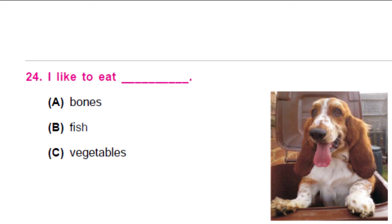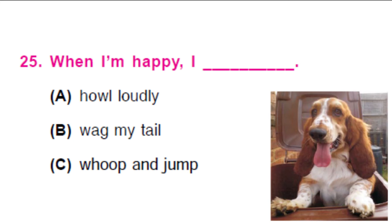Let's go to the next question. I like to eat dash — it's again about the dog. Which option is right? Yes, he loves his bones — so a dog loves to chew on bones, so option A is right. When I am happy, I dash — what does the dog do when he is happy? Is it A, B or C? It is B — a happy dog always wags his tail. Well done.